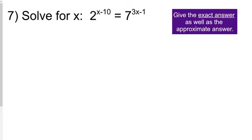We're going to be solving for the exact answer as well as the approximate answer. Taking a look at number 7, you'll notice that we actually have two different bases in the equation — base 2 on the left and base 7 on the right. So when you're choosing what kind of logarithm to use to simplify this equation, you can choose log base 2, log base 7, or even a different base like 10 or e.